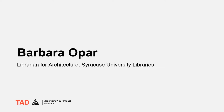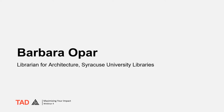This is Barbara Opar. I'm the librarian for architecture at the Syracuse University Libraries. I was given a set of questions, and I'm going to try to address them. The questions are: what are the relevant impact metrics for scholars in the design fields? How is architectural research similar or dissimilar to other fields in terms of measuring impact? How important are impact factors? What other methods exist? Since these questions are intertwined, I will address them together. My comments will focus on the discipline of architecture, as this is the field with which I am most familiar.